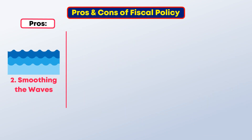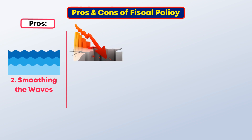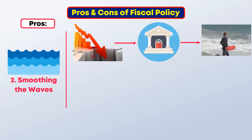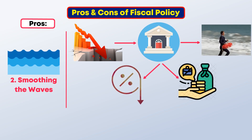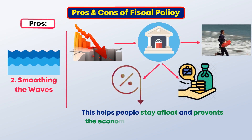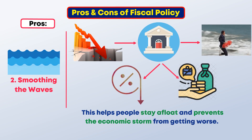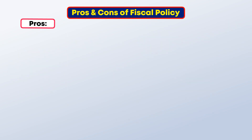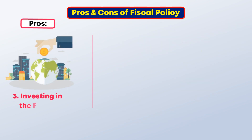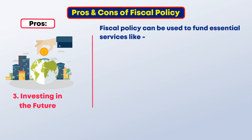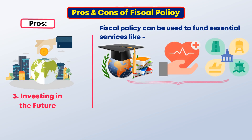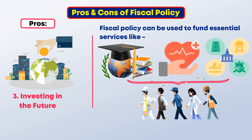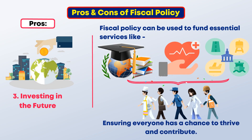Two, smoothing the waves. During economic downturns, governments can act like lifeguards, lowering taxes or providing unemployment benefits. This helps people stay afloat and prevents the economic storm from getting worse. Three, investing in the future. Fiscal policy can fund essential services like education, healthcare, and infrastructure — the anchors that hold society together, ensuring everyone has a chance to thrive and contribute.